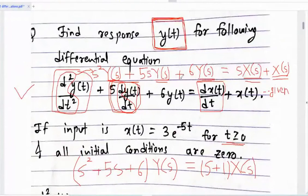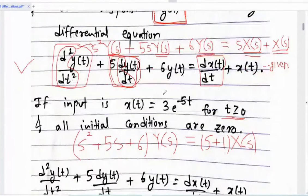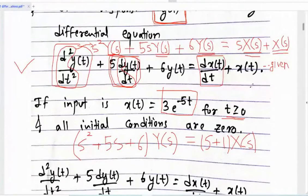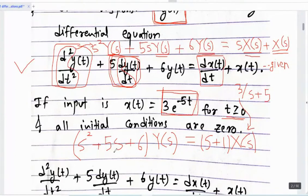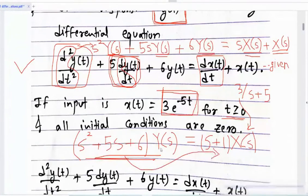x(t) is given as 3e^(-5t). So X(s) = 3/(s+5) by Laplace transform. Substitute this 3/(s+5) in here. Bring this term over and then we have to take the inverse Laplace transform. Now see the solution — here I have taken the Laplace transform.